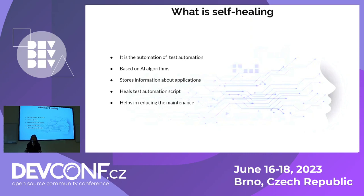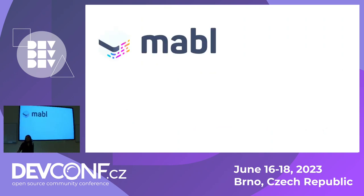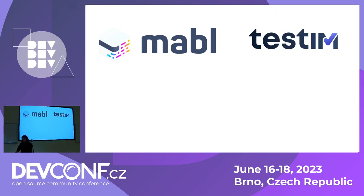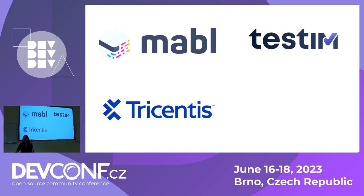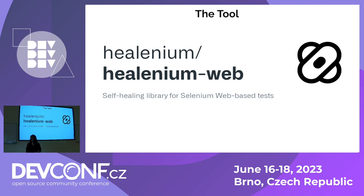We have a lot of tools in the market and it is quite confusing for users to choose one of them. I'm not going to share which is the best tool, but we will talk about how many tools we have in the market. We have Mabel, Testim, Trescentes, and Helenium. I'll pick one testing tool to help you understand how an AI-based testing tool works. I just chose Helenium — it's random, no biasing.